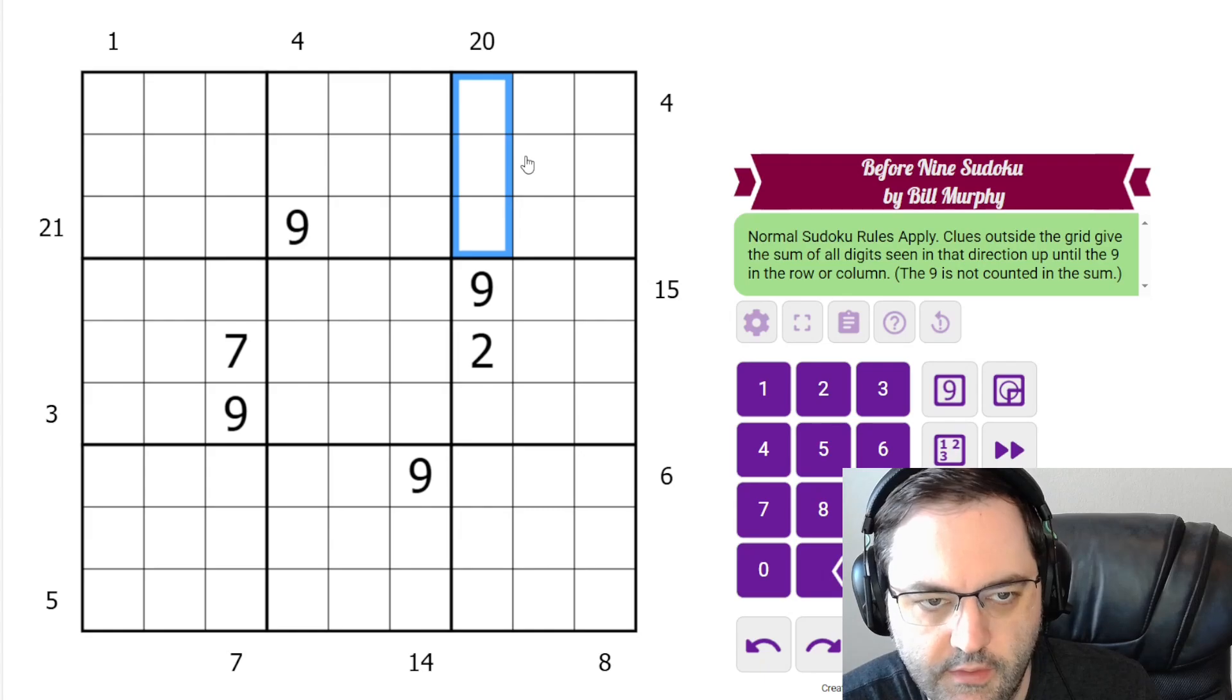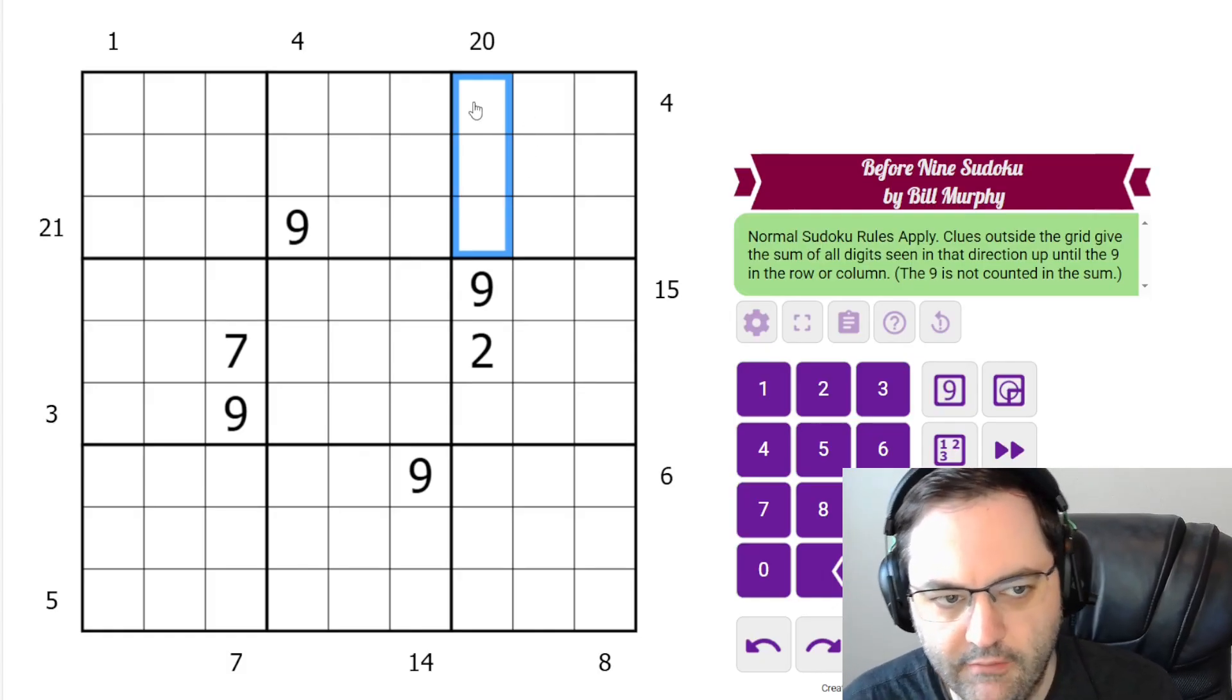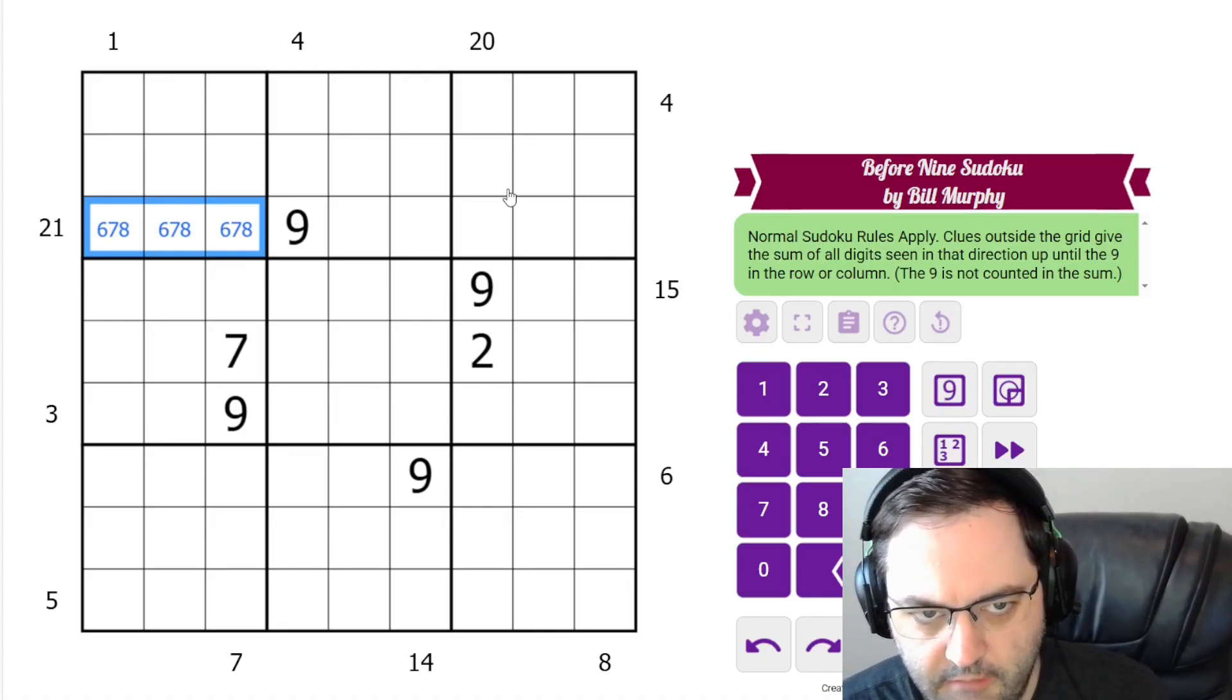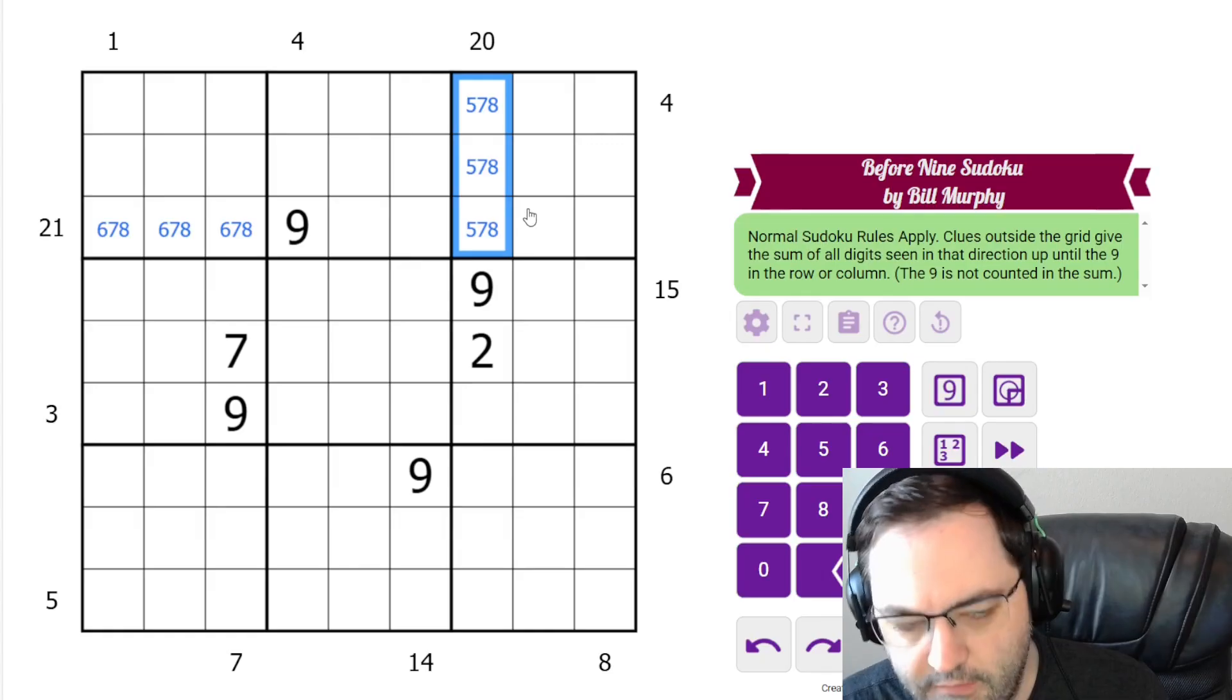Ordinarily the max we could have in three cells is 24, but that's including a 9. If we don't have a 9, the max we can have is 21, which we have here, and that's 6, 7, 8. 20 is one off from that, and the only way to do it is 5, 7, 8.